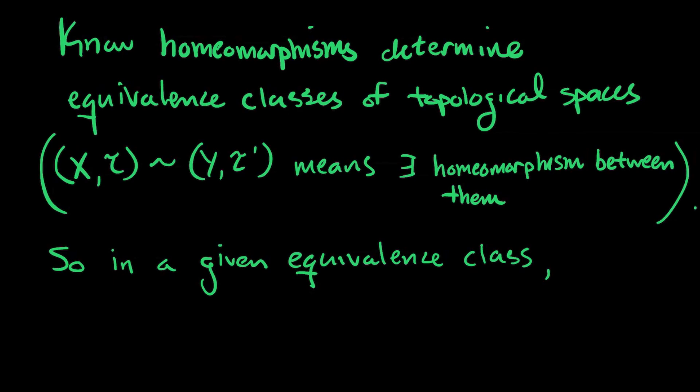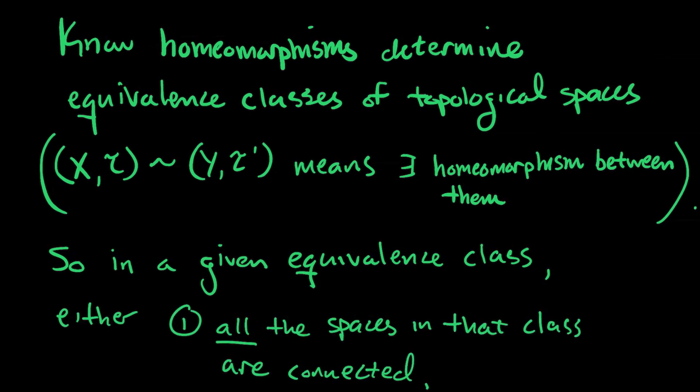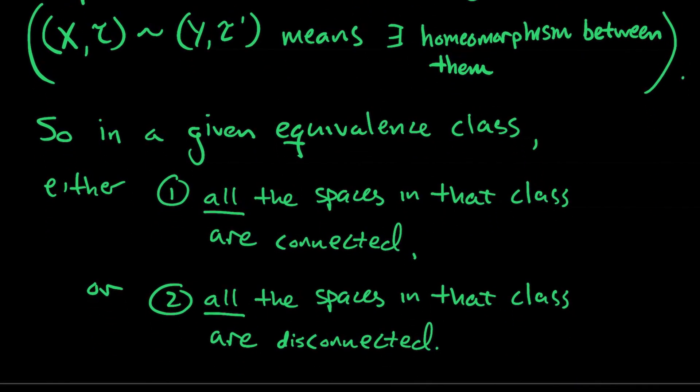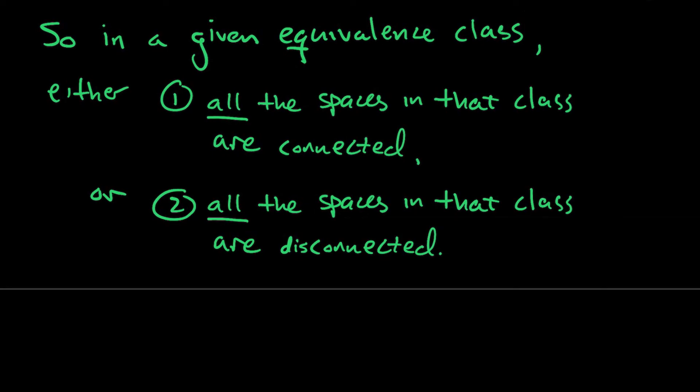And so why that is important for us or what that allows us to do, you know, we're kind of acting like biologists where we want to classify things. We want to determine all possibilities that can happen. And so theorems like this are really helpful because if you know if you're in a given equivalence class, then either one, all of the spaces that are in that class are connected, or two, all of the spaces in that class are disconnected. So if two sets are equivalent to each other topologically, in other words homeomorphic, then you can always expect everybody in that equivalence class to either be connected as well or everybody in that equivalence class to be disconnected.